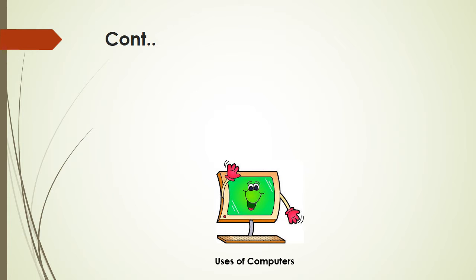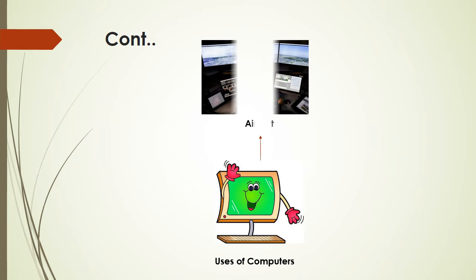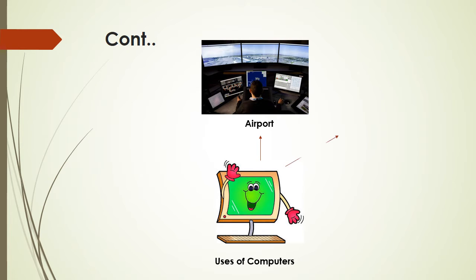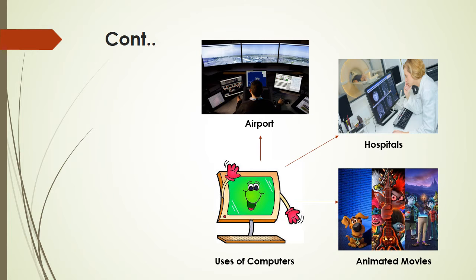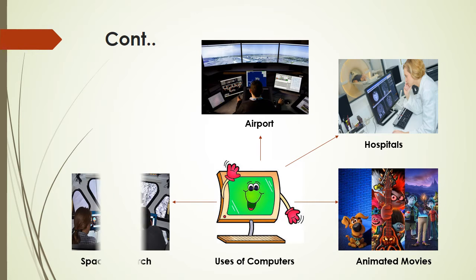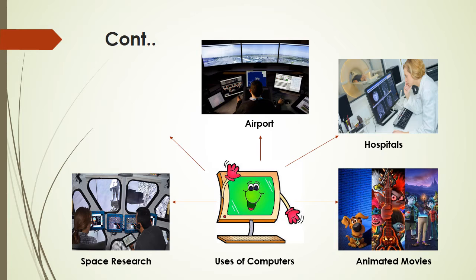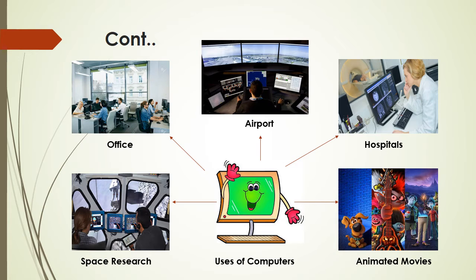In a previous class you have already learnt the fields in which a computer is used. Now we will see the different fields: first is at the airport, then in hospitals, then animated movies, space research, and offices. These are the basic areas in which we are using computers.